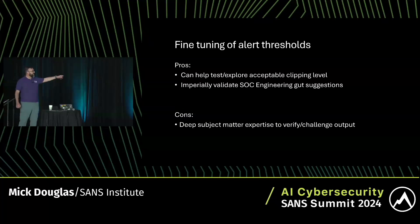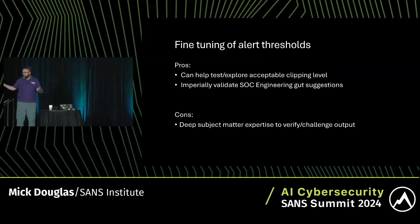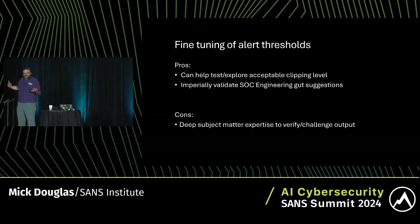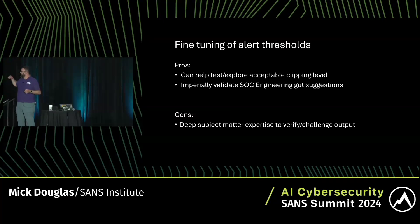One of the things you can do with Markov chains — and I've had some really cool success with this — is use it to see what the alarm threshold, or clipping level, for a particular resource might be. I've also used this to validate SOC engineers' gut suggestions of what they think is a good alert level.